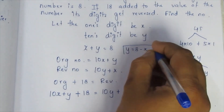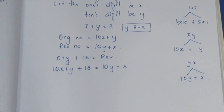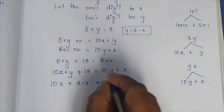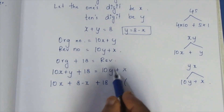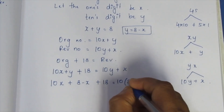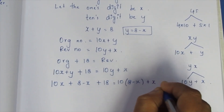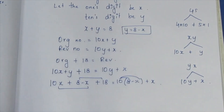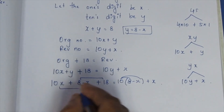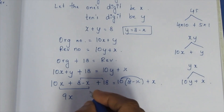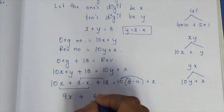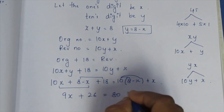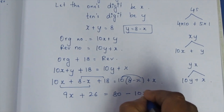Since x + y = 8, we get y = 8 − x. Substituting into the equation: 10x + (8 − x) + 18 = 10(8 − x) + x. Multiplying out and collecting like terms gives us 9x + 26 = 80 − 10x + 6.